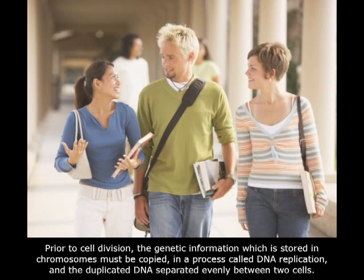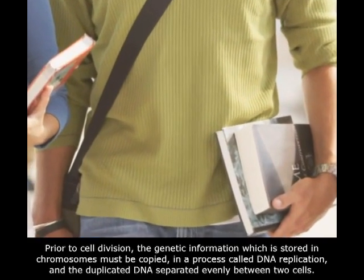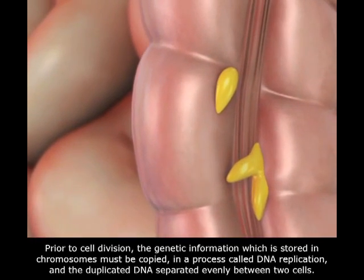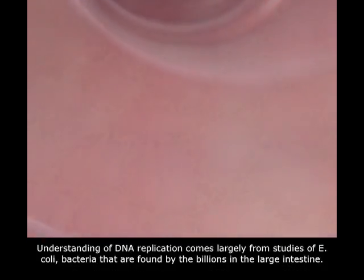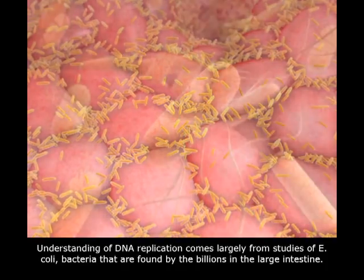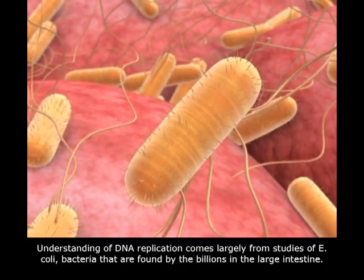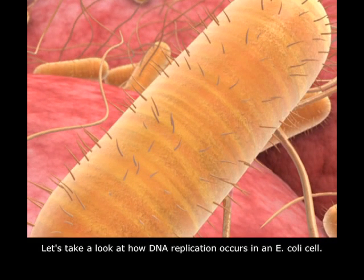Prior to cell division, the genetic information which is stored in chromosomes must be copied in a process called DNA replication, and the duplicated DNA separated evenly between two cells. Understanding of DNA replication comes largely from studies of E. coli, bacteria that are found by the billions in the large intestine. Let's take a look at how DNA replication occurs in an E. coli cell.